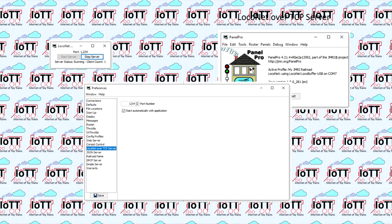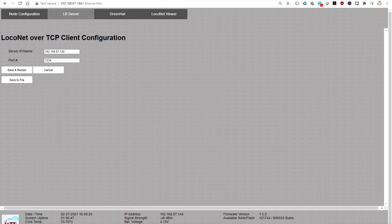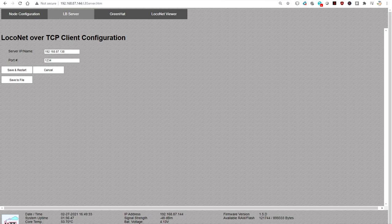In the server monitor, of course, the client count is incremented after the client connected. Next, I can also connect the IoTT-stick of the green hat to the LB server. All I need to do is selecting LB server client as command source. After restart, the configuration screen will show the LB server tab where I can enter the IP address and port number of the LB server I want to connect to. Make sure this is the same port number as used in the LB server setup, so 1234 in this case.